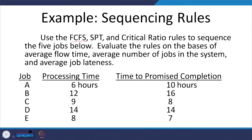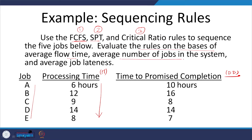Let us now work through one example to see how different rules are applied. We want to apply three rules — FCFS, SPT, and critical ratio — to sequence five jobs A, B, C, D, E. We are given their processing times and due dates. We will evaluate the rules on the basis of average flow time, average number of jobs in the system, and average job lateness. Let us start the calculation for each rule separately.